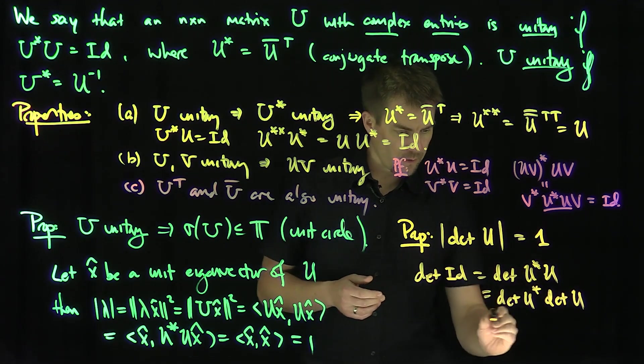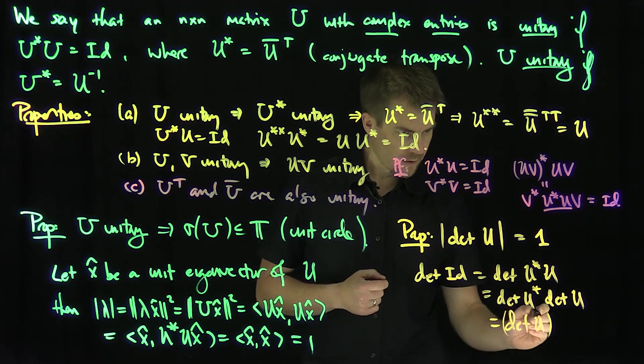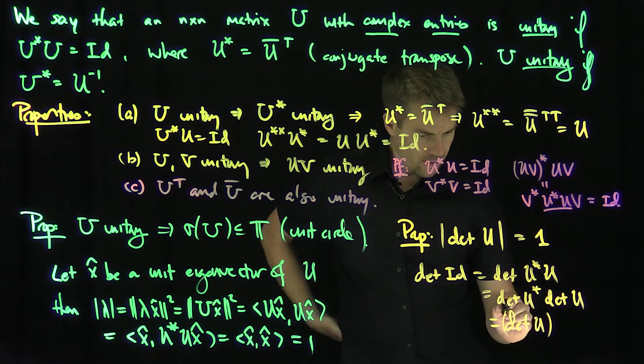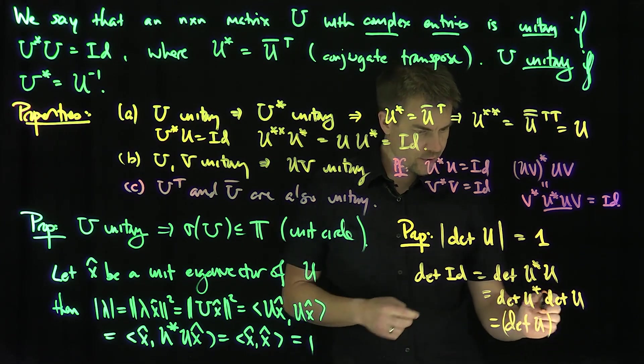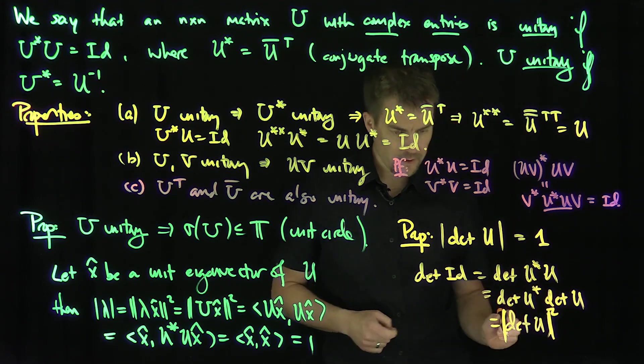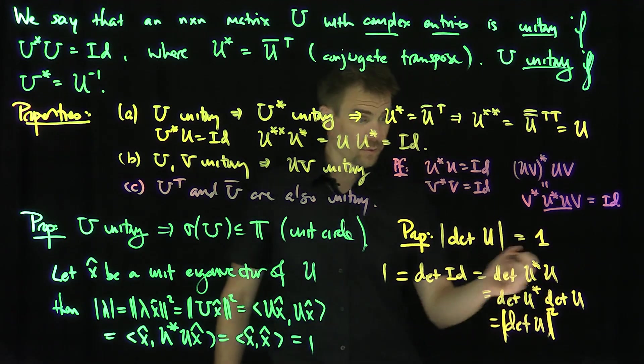And so, of course, both of those things are the determinant of U. So that's the determinant of U, quantity squared. And that's complex conjugate, of course. So complex conjugate, modulus of this thing, quantity squared. And now, of course, the determinant of identity is equal to one. So, in other words, the modulus of any of these things is equal to one.